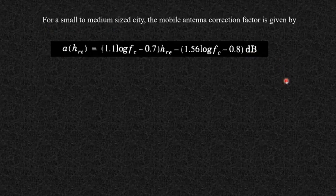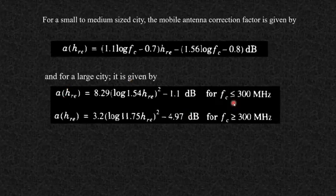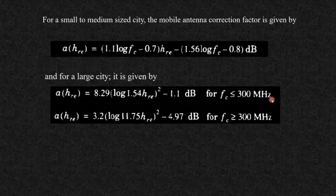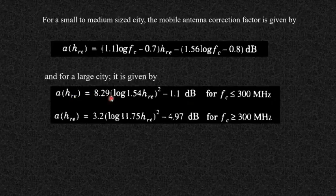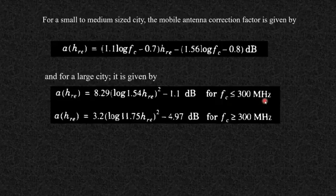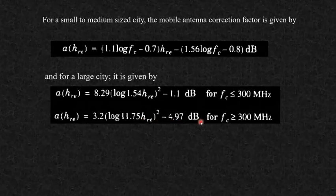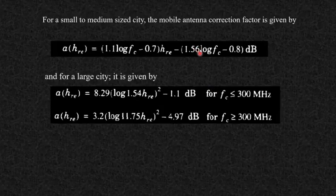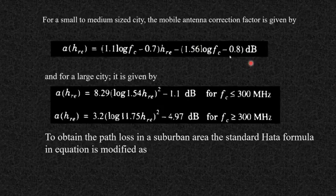For large cities with frequencies less than 300 MHz, the correction factor is: A(Hre) = 8.29 × (log(1.54 Hre))² − 1.1 dB. For large cities with frequencies greater than 300 MHz, the correction factor becomes: A(Hre) = 3.2 × (log(11.75 Hre))² − 4.97 dB. So in large cities, the correction factor is further categorized based on the carrier frequency.